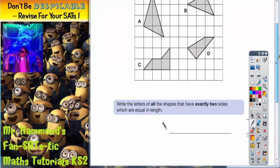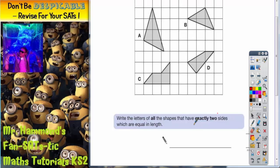Write the letters of all the shapes that have exactly two sides, no more than two sides or no less than two sides, exactly two sides which are equal in length.